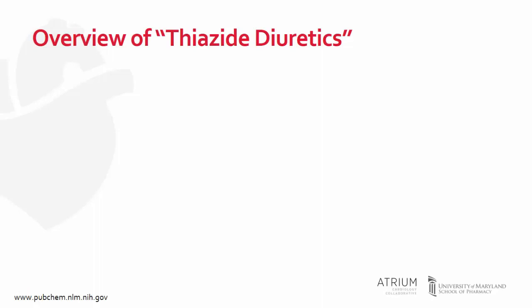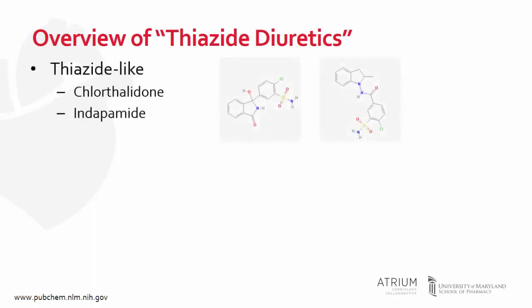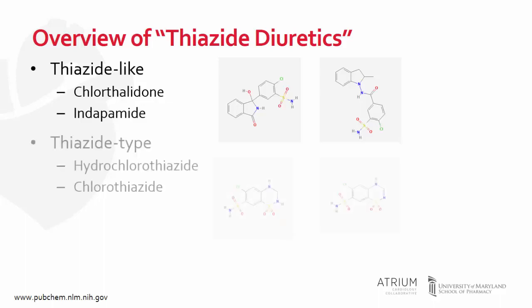The term thiazide diuretics is used to encompass both thiazide-like diuretics such as chlorthalidone and indapamide, as well as true thiazide-type diuretics such as hydrochlorothiazide (HCTZ) and chlorothiazide. What distinguishes these two categories from each other is the presence of a benzothiadiazine ring, as shown here at the bottom. Whereas thiazide-like diuretics do not possess this, true thiazide diuretics do possess this.